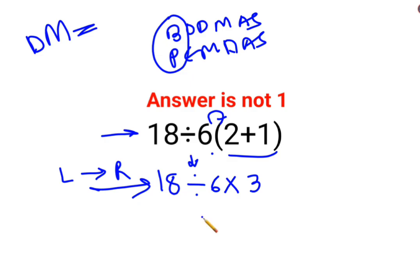So 18 divided by 6 which is 3, multiplied by 3. So the answer for this question is supposed to be 3 multiplied by 3, which is 9. I hope this is very clear to everyone.